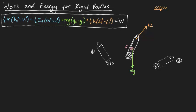The shorthand notation for this is the change in kinetic energy plus the change in gravitational potential energy plus the change in elastic energy is equal to W.